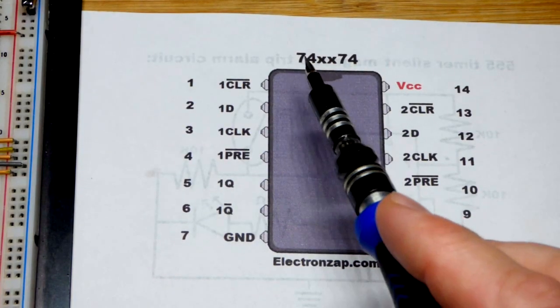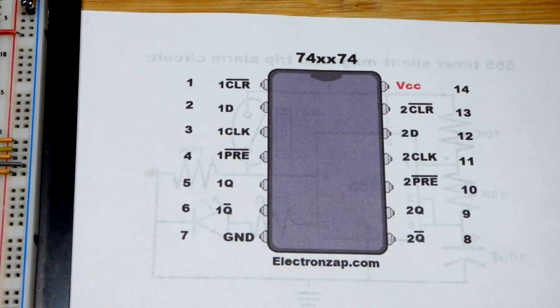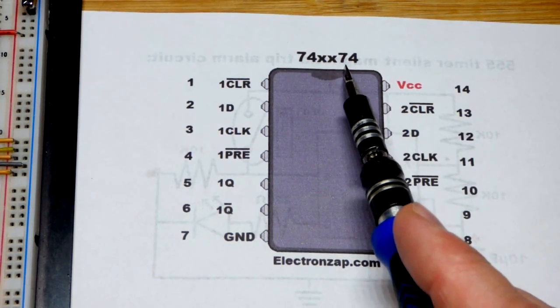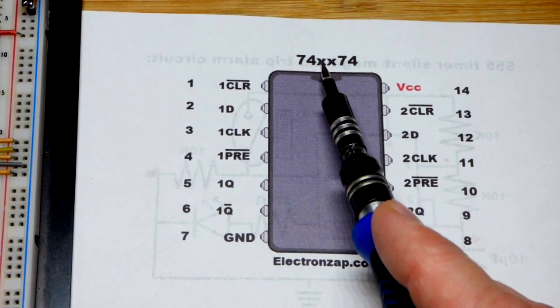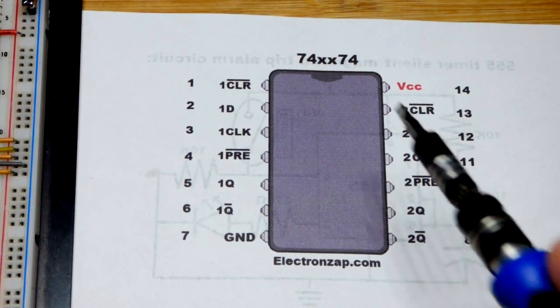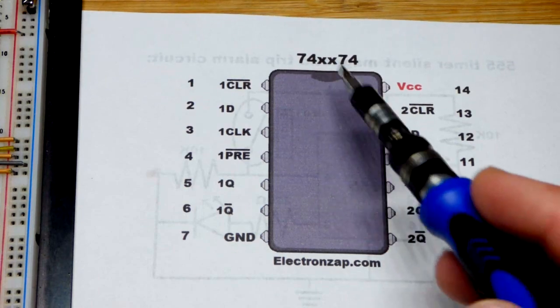The other day I was going through my 7400 series integrated circuits and this seems to be the next interesting one in line. I have it both in the HC high-speed CMOS and the LS low-power Schottky versions. We're going to use the HC high-speed CMOS version.